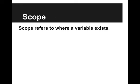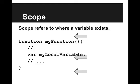So, what is scope? Scope refers to where a variable exists. Here, I have a function called myFunction, and I have a variable called myLocalVariable. I have three arrows drawn. And the question is, does this variable, myLocalVariable, exist at these three different points?